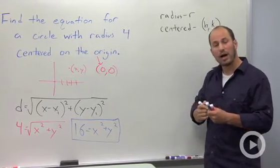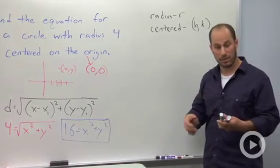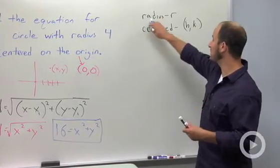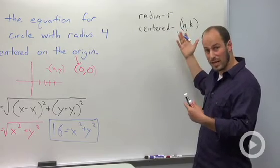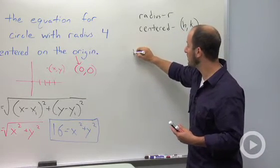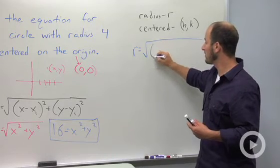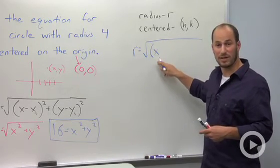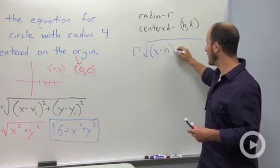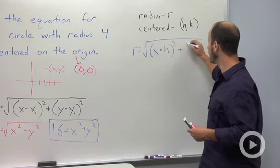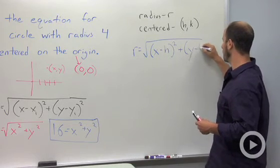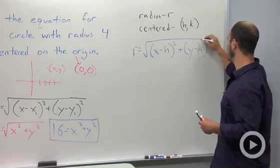We use the distance formula again. Our distance is from the center to the outside, which is r. So we have r equals the square root of (x - h)² plus (y - k)².